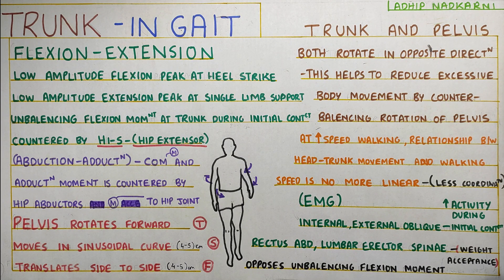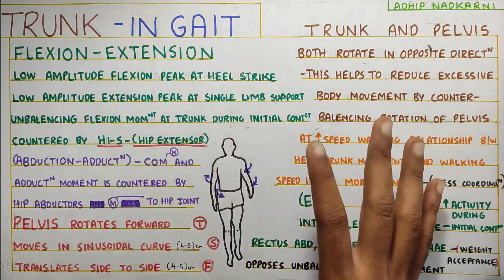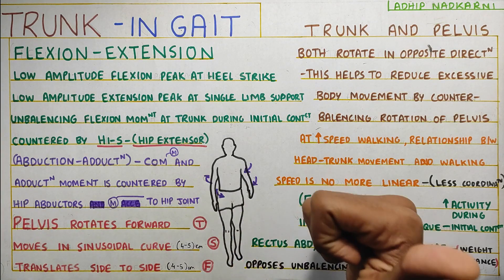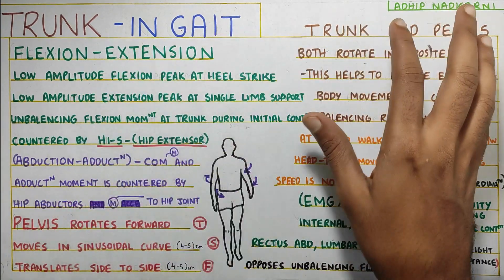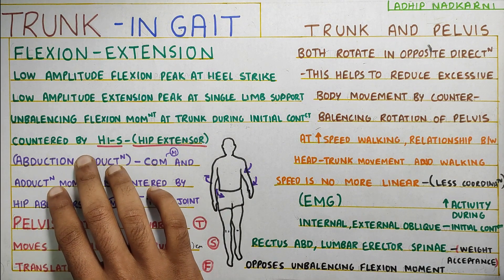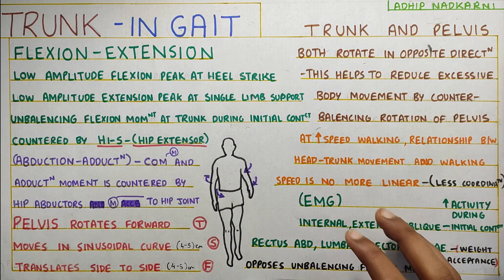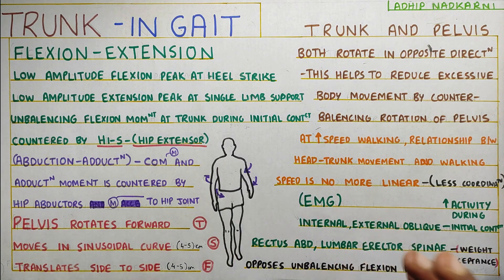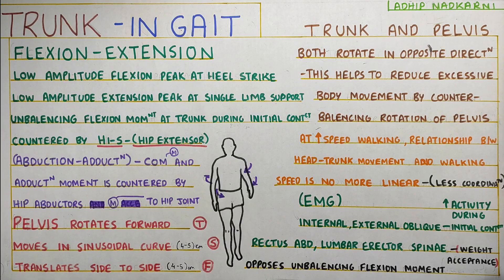In this video we are going to talk about the involvement of trunk inside the gait. Under this topic we are going to talk about six major things: first, flexion and extension; then rotation and how it is coupled with pelvis movements; abduction; adduction; speed of walking; and finally the EMG activation — that is muscle activation — seen at the trunk during gait.